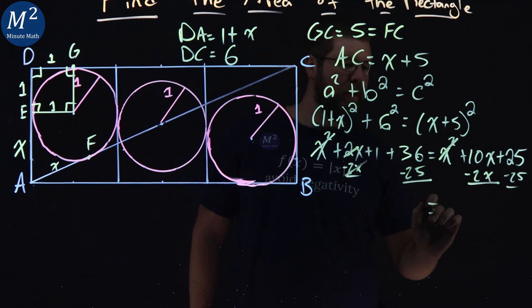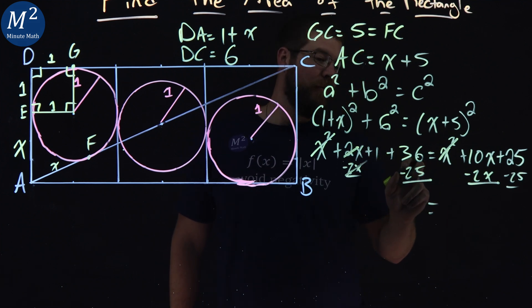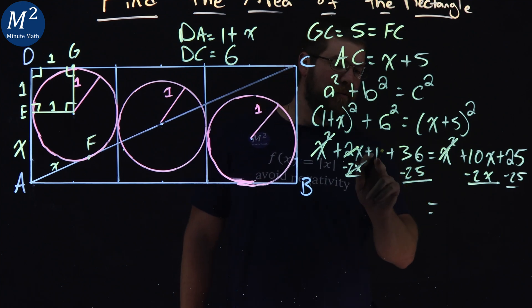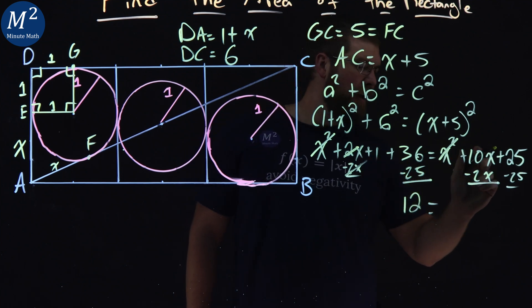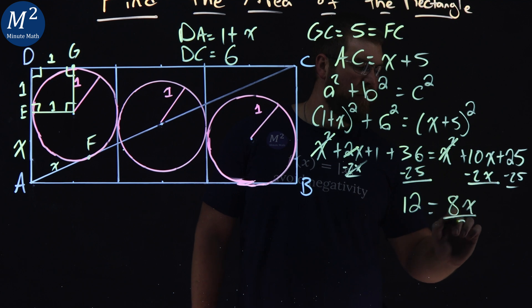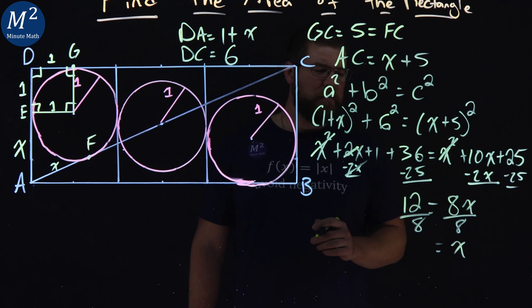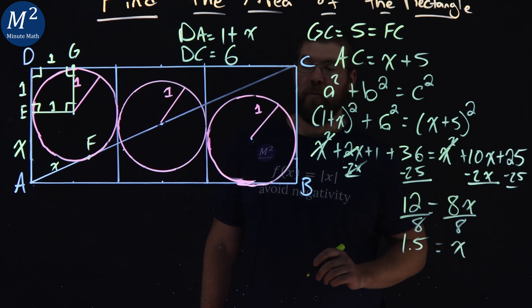Let's bring the minus 2X to the right side here, let's subtract a 25 as such. 2X cancels there. Well, 36 minus 25 is going to give me an 11, plus that 1 gives me a 12. And we have an 8X here. Divide both sides by 8, and 12 over 8 is equal to X, which simplifies to be 1.5.